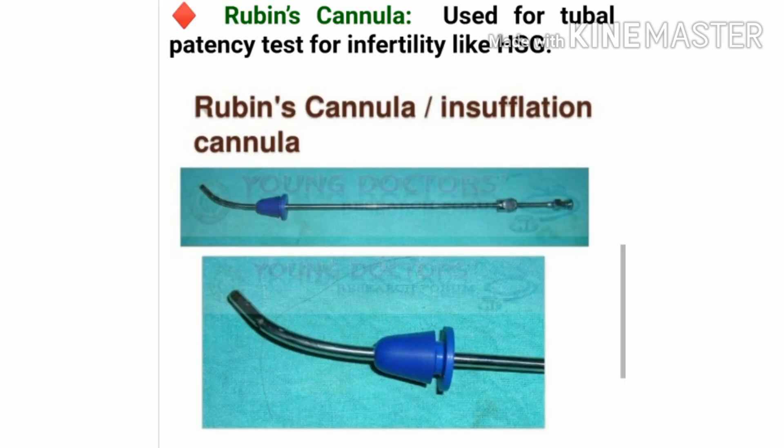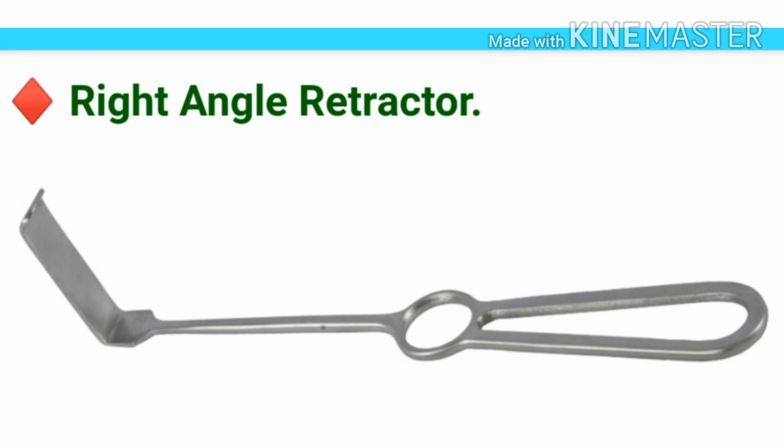This is the Robin's cannula. It is used for the tubal patency test for infertility, like HSG. It is also used to determine whether the fallopian tubes are occluded or not. This is the right angle retractor, also used to retract tissues and muscles.